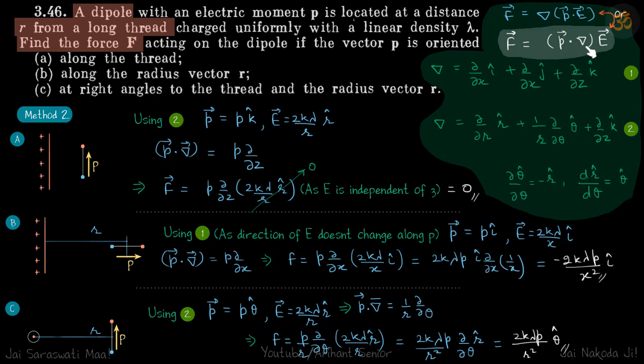So first we do p dot del. You can see only k cap component will survive from here. So p dot del will be p d by dz. So force is going to be this operator on E vector. So p d by dz on E vector.